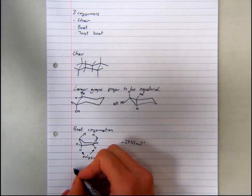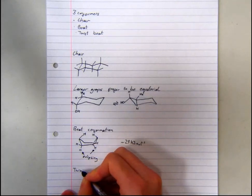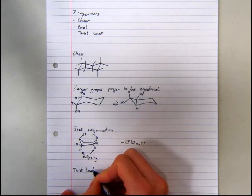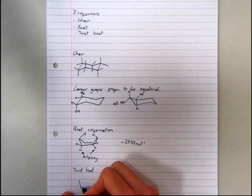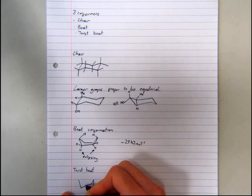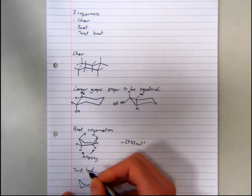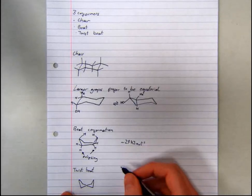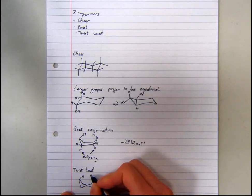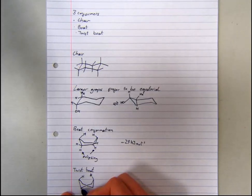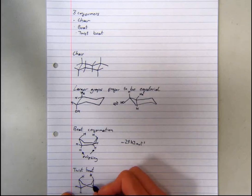The final non-planar conformer is the twist boat, which looks like this. The flagpole hydrogens are no longer so close together, and the eclipsing from the hydrogens has also been removed, as they now point in different directions.